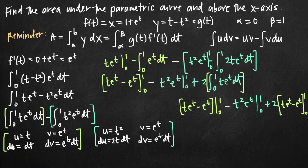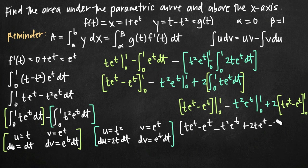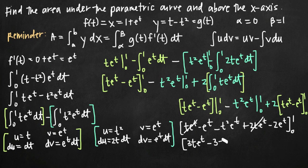Now all integrals are gone and we simplify. We collect like terms: 1 times t e to the t plus 2 times t e to the t gives 3t e to the t. Then minus 1 e to the t minus 2 e to the t gives minus 3 e to the t. And we still have minus t squared e to the t. So the full expression is 3t e to the t minus 3 e to the t minus t squared e to the t, evaluated on 0 to 1.